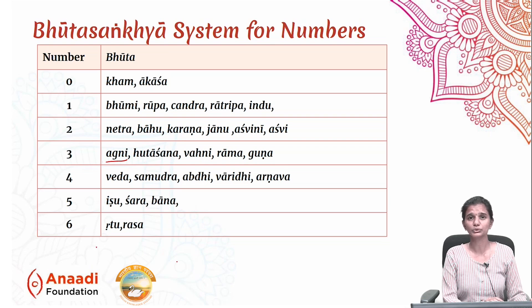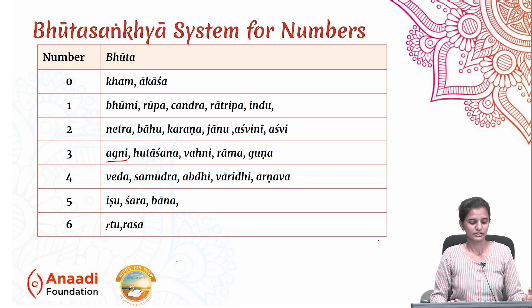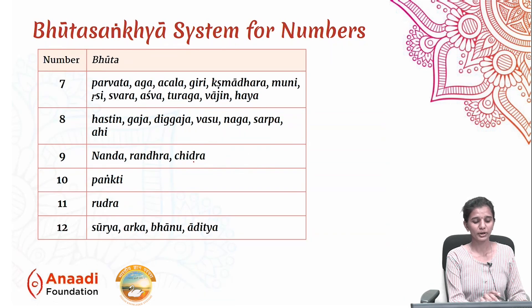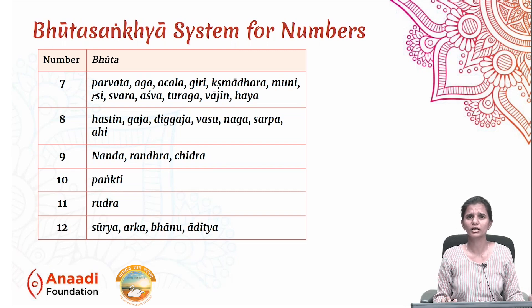Ritu means season — there are six seasons, so Ritu represents six. Rasa means the six tastes, also representing six. Parvata, Agha, Achala, Giri, and Kshmadhara all mean mountain. In our Puranas there were seven great mountains, so these words represent seven. We have all heard Saptarishi — so Rishi and Muni also represent seven.